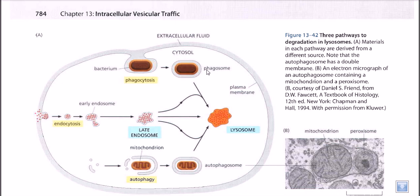The phagosome is the compartmentalized result of phagocytosis, with the bacteria inside. The phagosome then comes and fuses with a lysosome, because the contents need to be degraded. The lysosome provides hydrolytic enzymes along with a low pH environment, so the bacteria can easily be degraded using lysosomal enzymes.